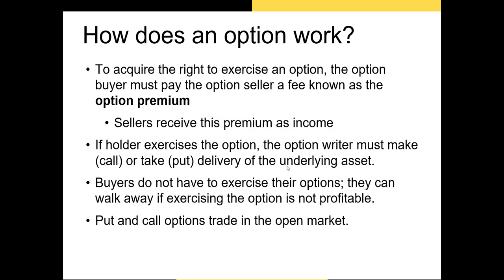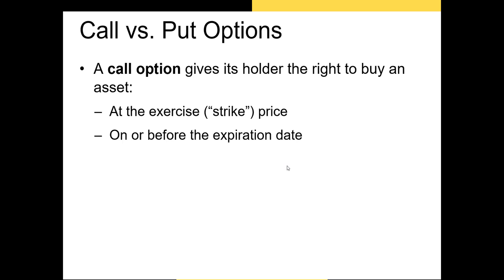Put and call options — the two primary types of options — trade in the open market much like stocks. There can be hundreds of different options written on a single asset. A call option gives its holder the right to buy an asset at a strike price. The strike price is set when the option is created. You'll always have an expiration date on any option; if you haven't exercised the option by the expiration date, the option becomes worthless.